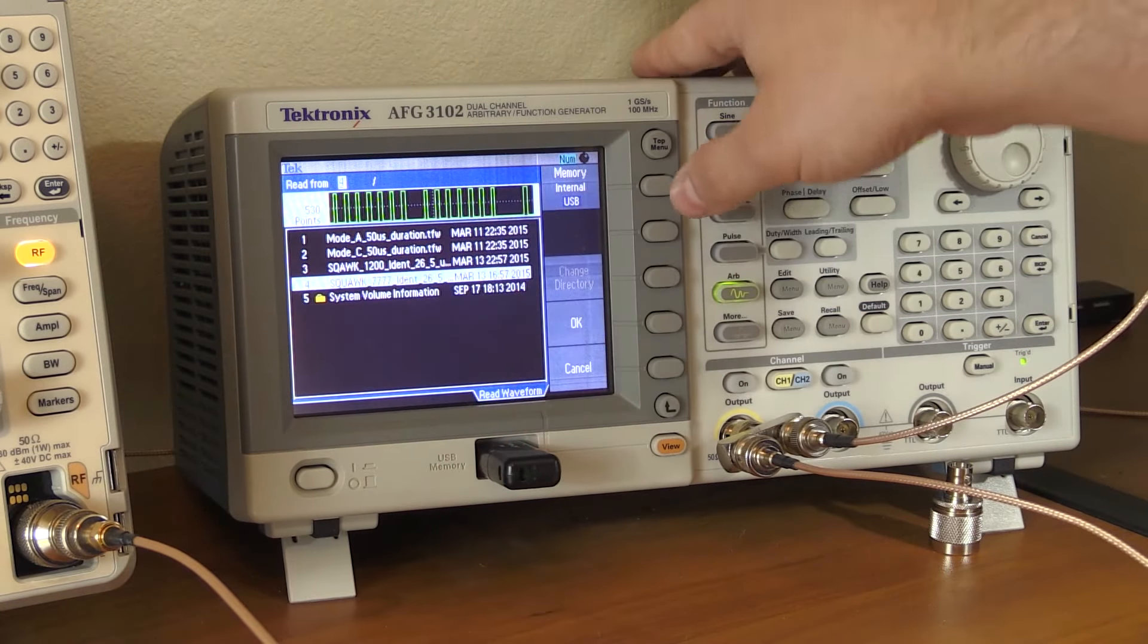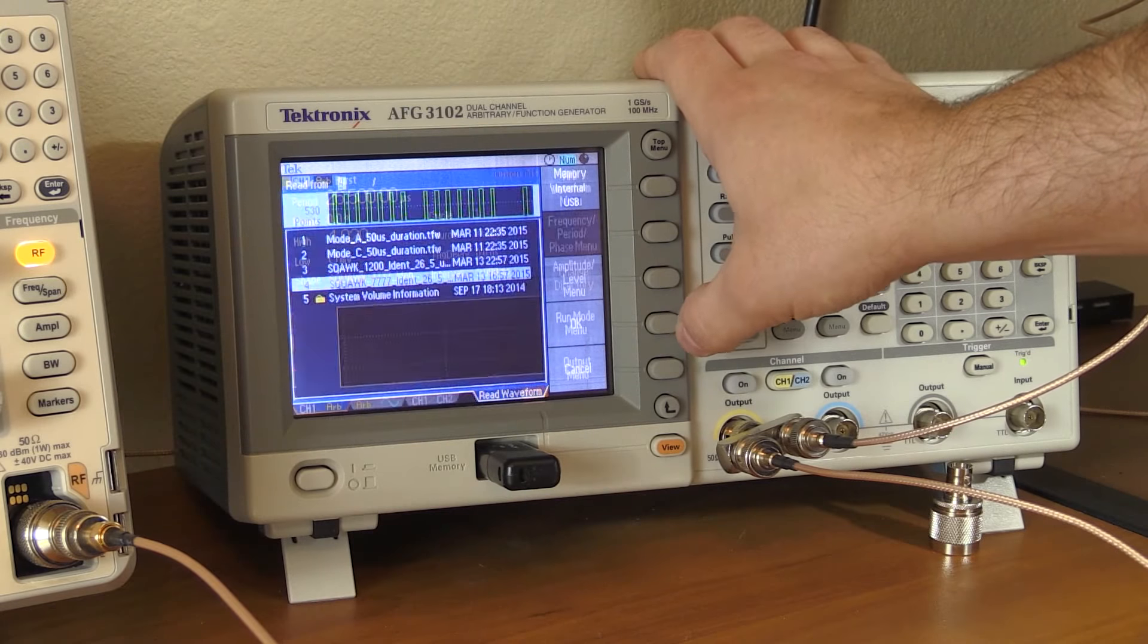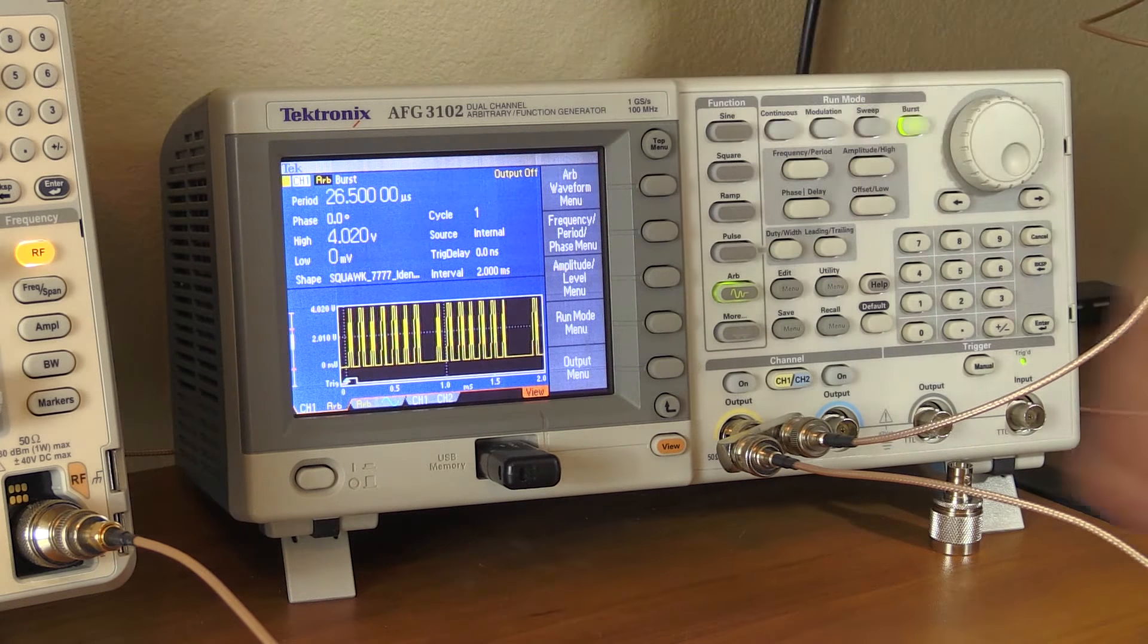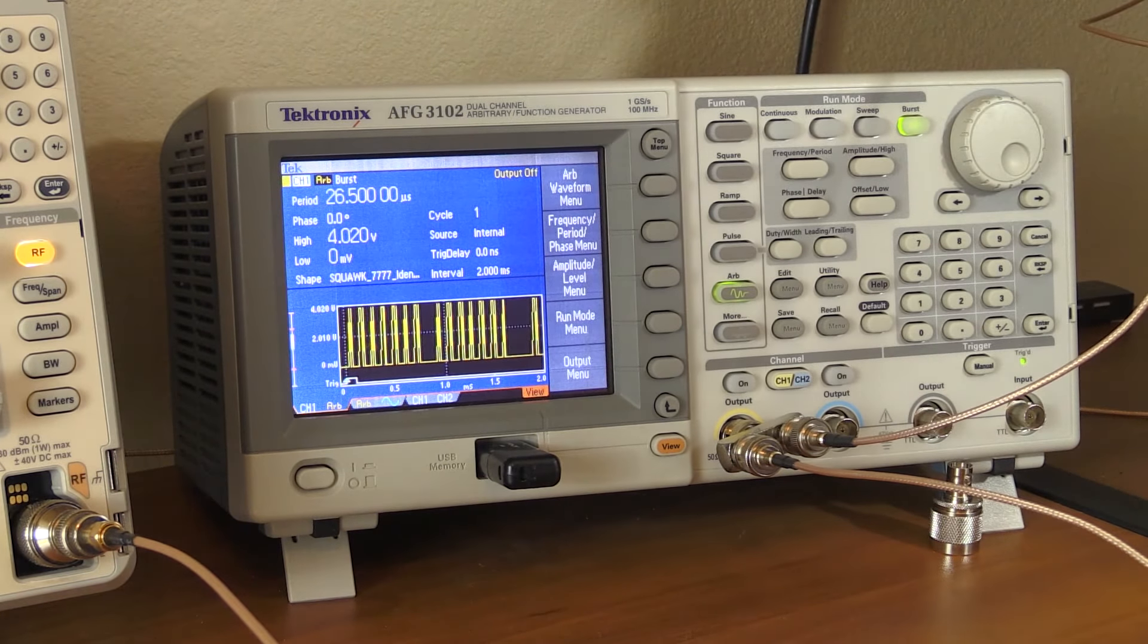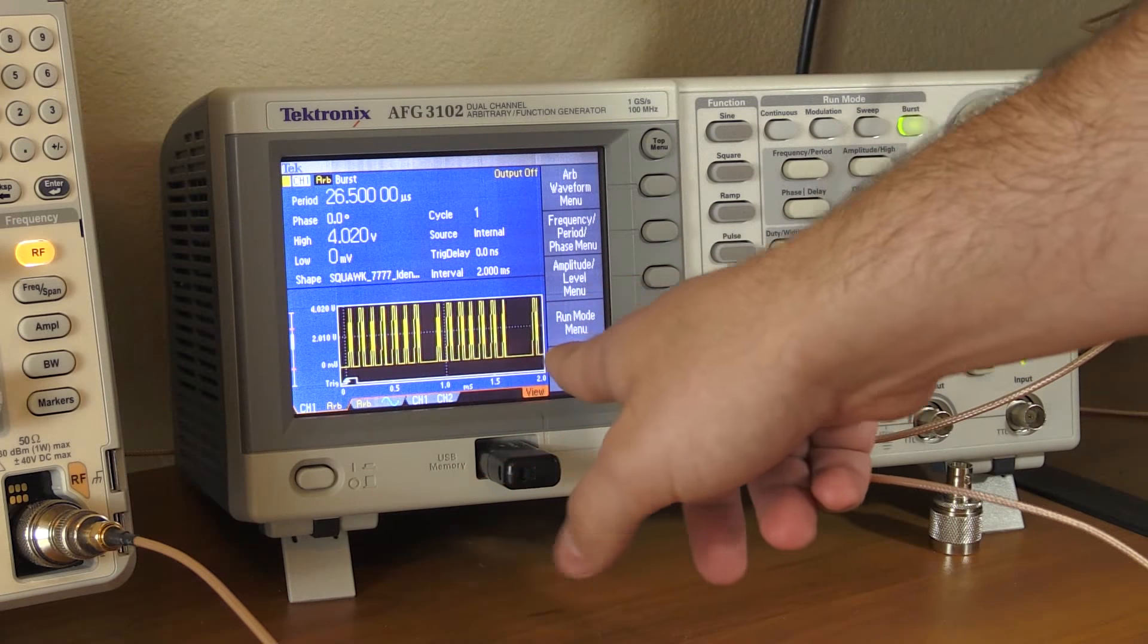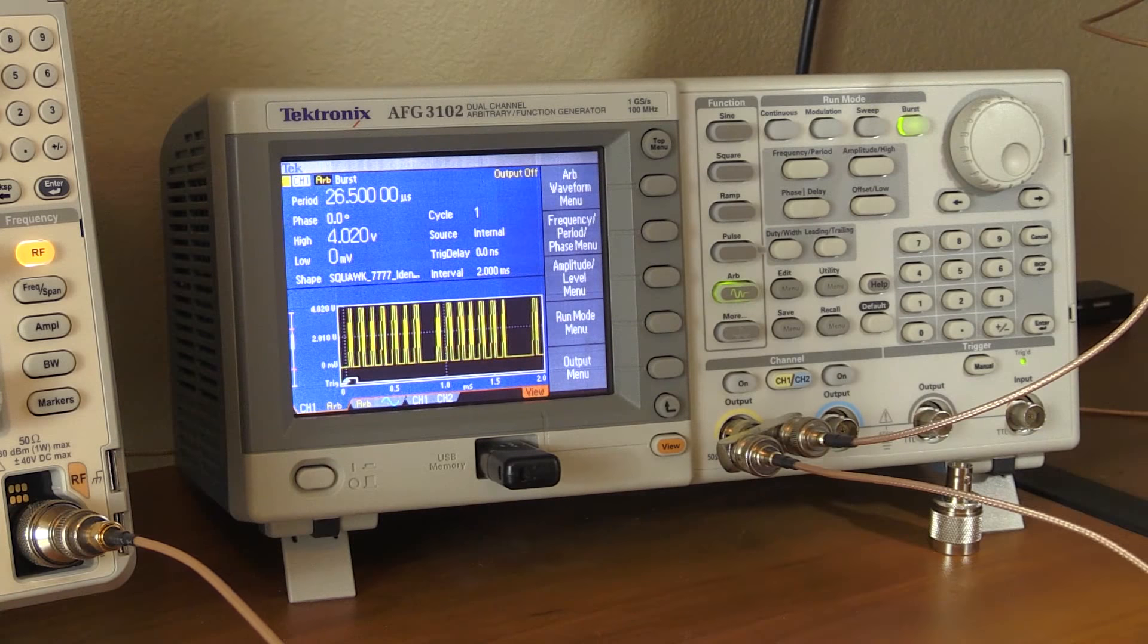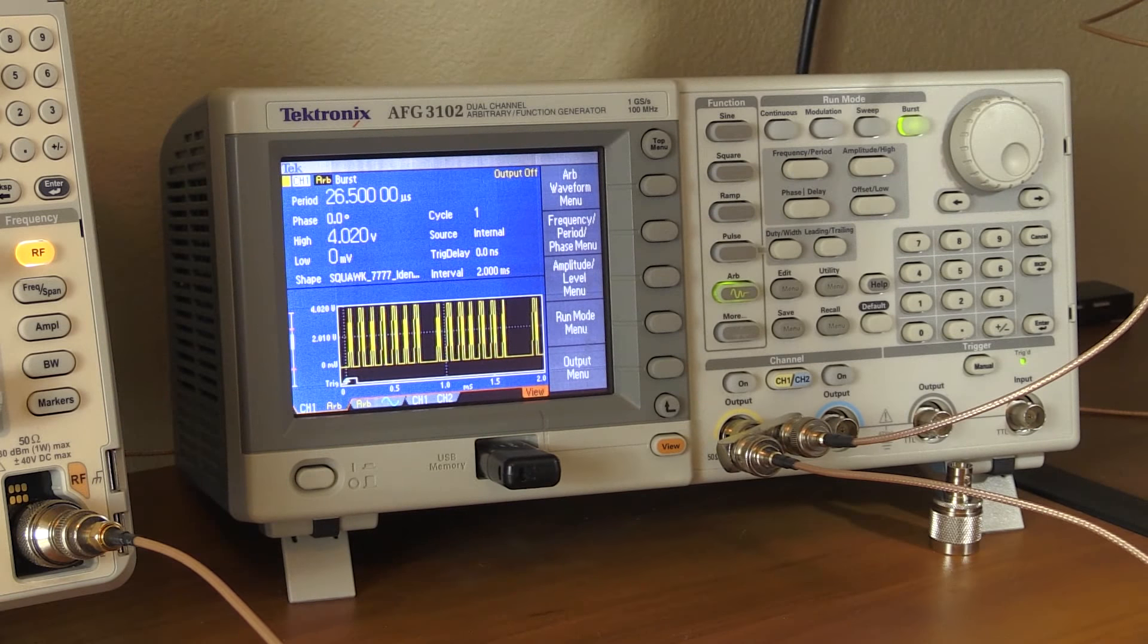So we're going to select our 777. By the way, great thanks to Alan Wolke, W2AEW. He made those arbitrary waveforms for me because I wasn't that familiar with how to generate them yet at that time. So what you see here is you see our pulses. You see the missing pulse in the middle and you see that ident pulse because this signal contains the ident pulse frame in there.